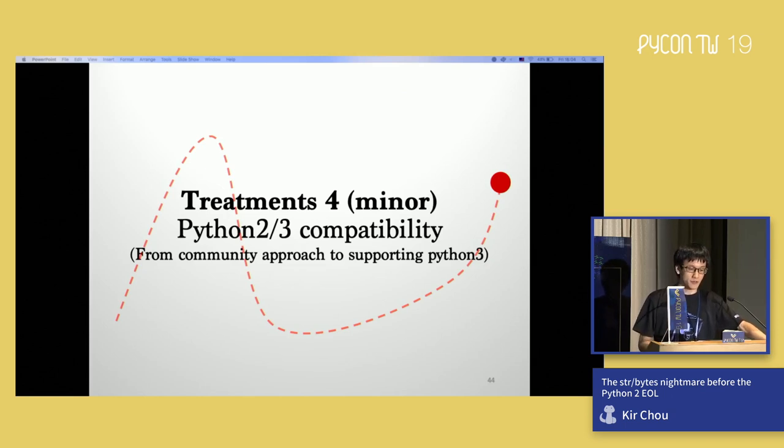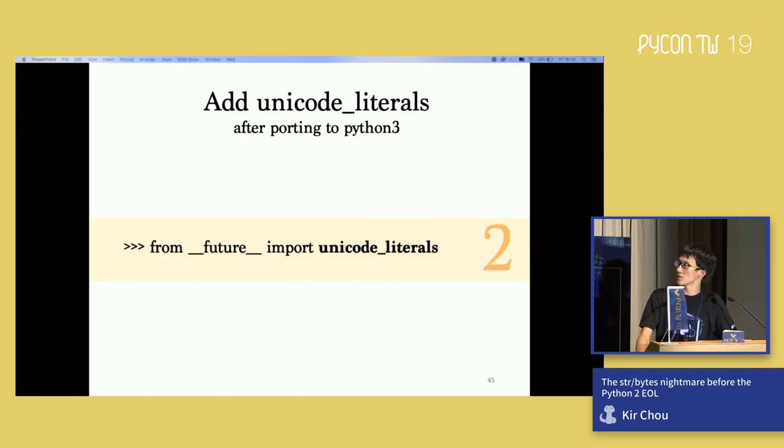The fourth thing is the Python 2/3 compatibility. From the previous example, we basically say the fundamental difference there. So if you want to make your Python 2 code still running the same as Python 3, after it can run in Python 3, the thing you can do is from future import unicode_literals. This will make your Python 2 code behavior like your Python 3. But remember, only put this after your code has the same behavior. Otherwise, it will be pretty problematic.